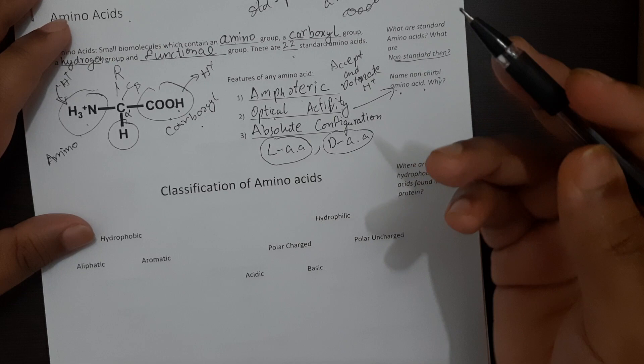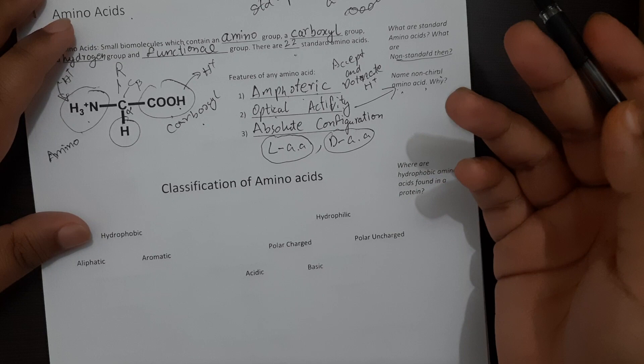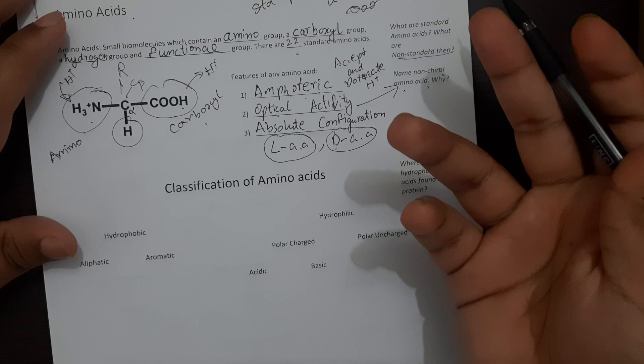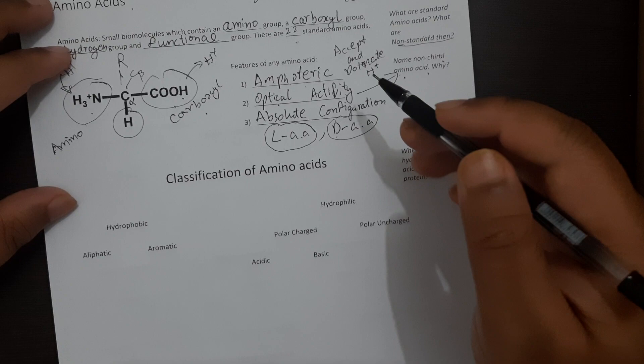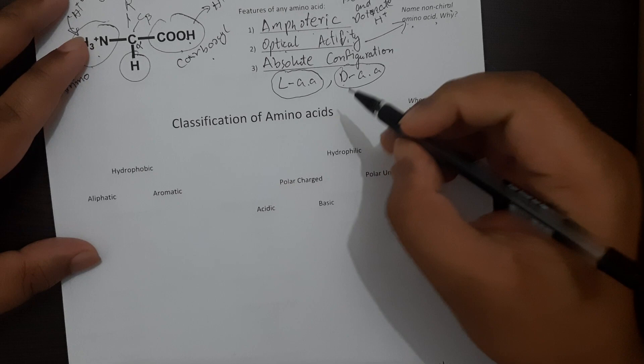Whereas D-amino acids are mainly found only in the cell wall of bacteria and that's the major reason why our defense mechanisms have an inability to degrade certain bacteria because of the presence of D-amino acids which our enzymes do not have the ability to attack. So I hope this part is okay and we'll be moving on into the classification of amino acids.